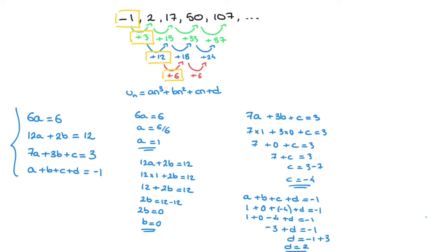We now have all four coefficients and can state the sequence's formula: un equals n cubed minus 4n plus 2. The bn squared term disappears since b is 0. This is how we find the formula for any cubic sequence. I really hope that helped — please hit like on this video and subscribe to our channel. See you soon.